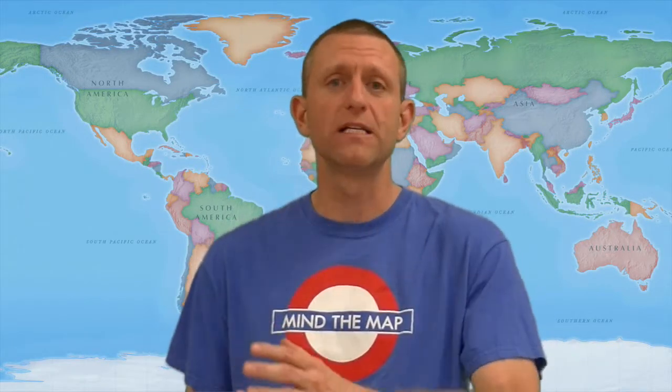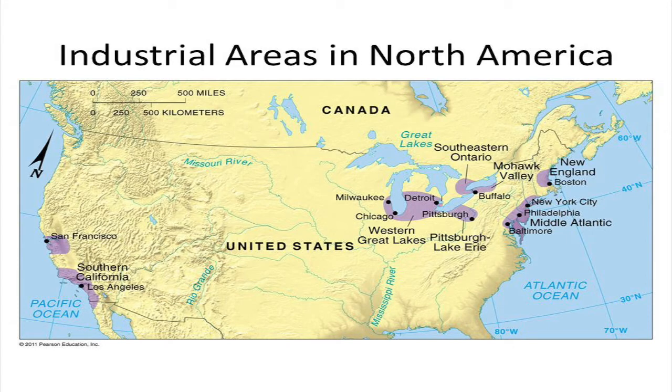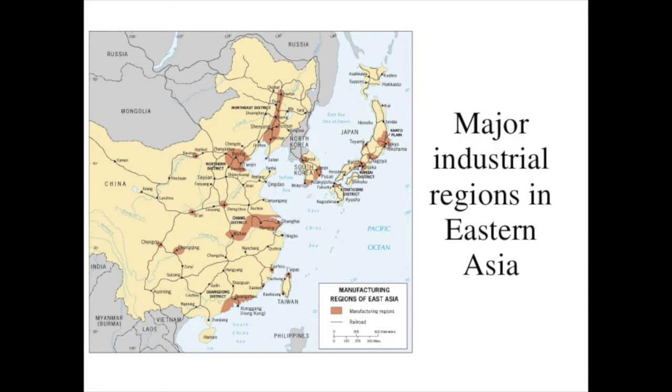In Europe, the key areas are the United Kingdom, the Rhine River Valley between France and Germany, and the Po Basin in Northern Italy, plus some areas in Eastern Europe and Russia. In North America it breaks down into three areas: the East Coast from New Jersey and Baltimore up to Boston, the Great Lakes region known as the Rust Belt or Southern Canada, and the West Coast from San Francisco to San Diego. In East Asia it focuses on Japan and China, with China having just a couple of major industrial areas. As long as you know the general areas and some of the products coming out of those areas, you'll be fine — and that wraps up Key Issue 1.